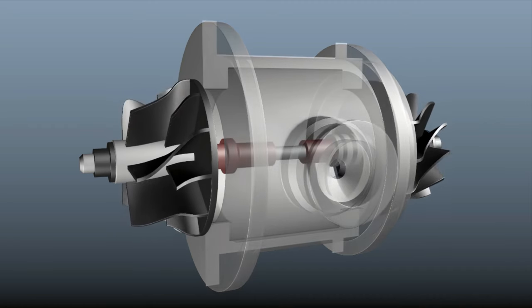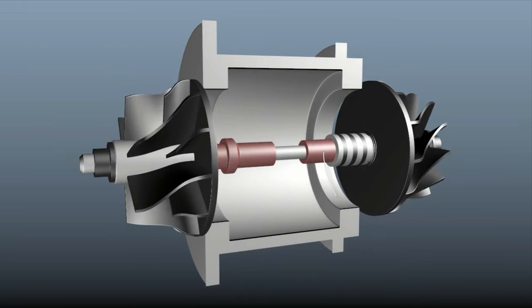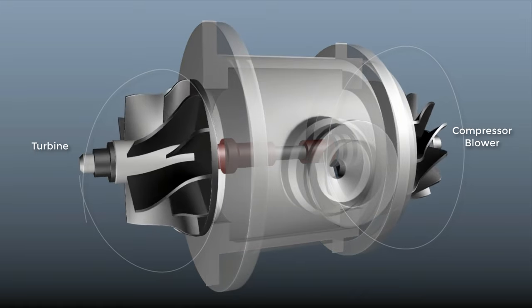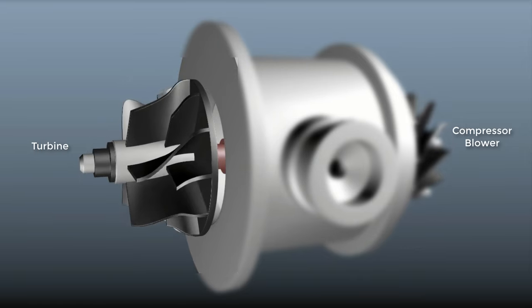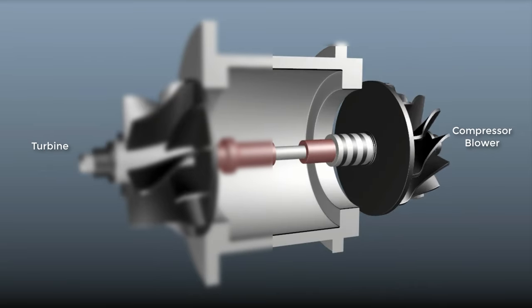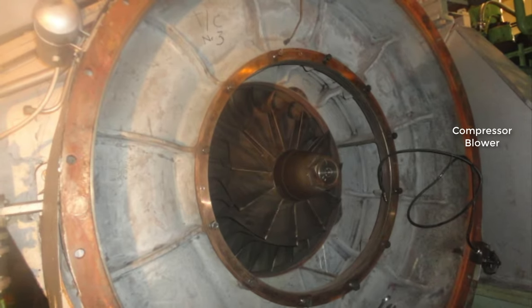The marine engine turbocharger consists of mainly two parts, the blower side and the turbine side. The turbocharger consists of a single stage impulse turbine connected to a centrifugal impeller on the other side through a shaft.